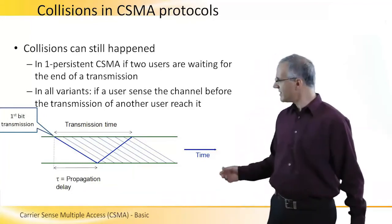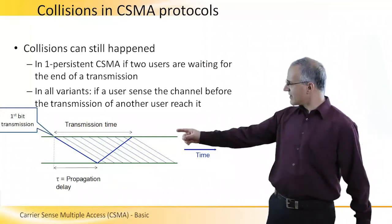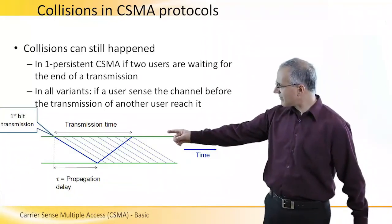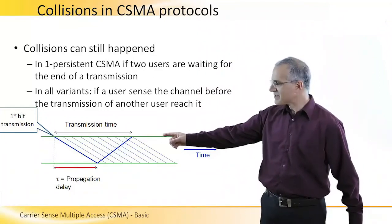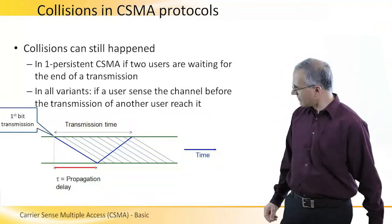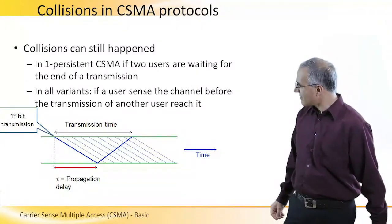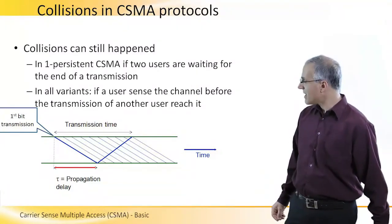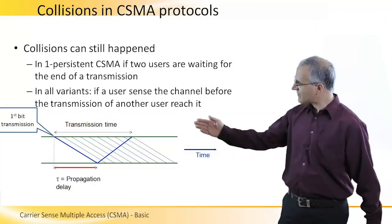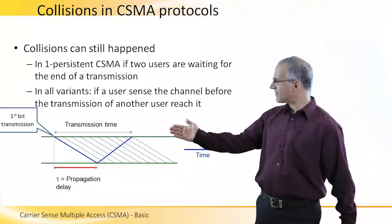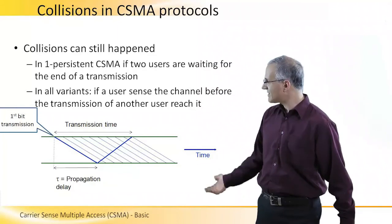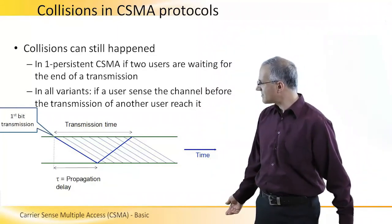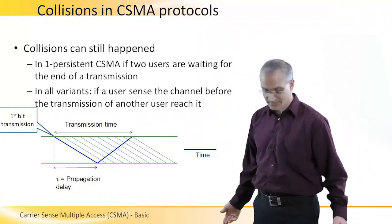What you can see here is that some user — the user above — starts transmitting the first bit. However, this transmission needs to propagate through the network and it doesn't happen in zero time. If after the transmission is started, but before the signal has reached me, I sense the channel, I will start transmitting too and a collision will occur.